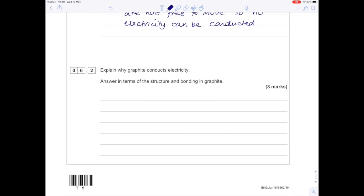Explain why graphite conducts electricity in terms of structure and bonding. Graphite is a giant covalent structure whereby each carbon atom is bonded to three others, meaning that the fourth electron is free to move, or delocalized, and can carry the charge.